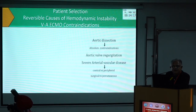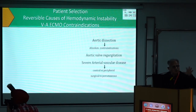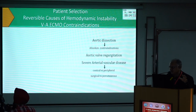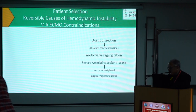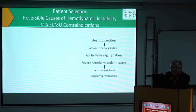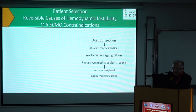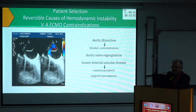What are the contraindications? So what you look at is you have to rule out when you should not do a procedure. When you should not be putting the patient on ECMO: aortic dissection is an absolute contraindication, significant aortic regurgitation — obviously VA ECMO is not going to work — and significant peripheral vascular disease.